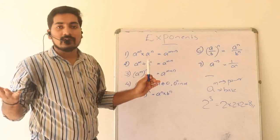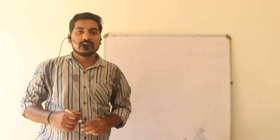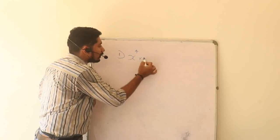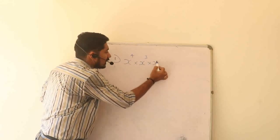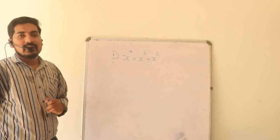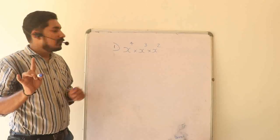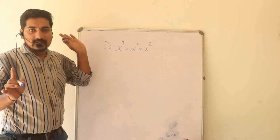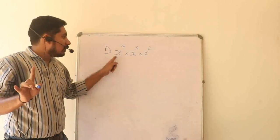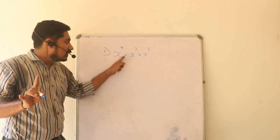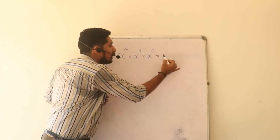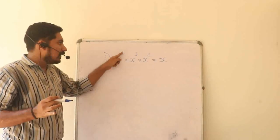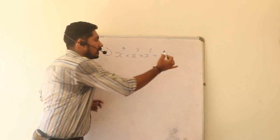Let's take a question. The first question is: x raised to 4, into x raised to 3, into x raised to 2. We will apply the first rule — a raised to m and a raised to n gives a raised to m plus n. Write the base, then add the powers: 4 plus 3 plus 2 equals 9. So the answer is x raised to 9.